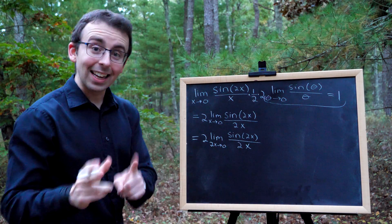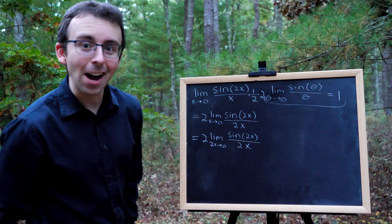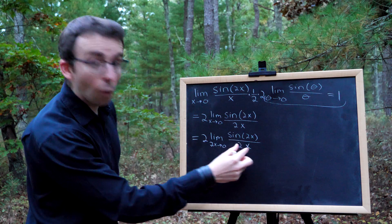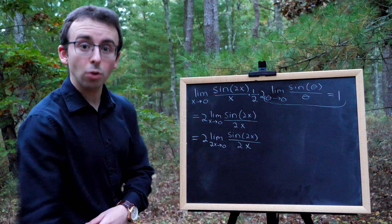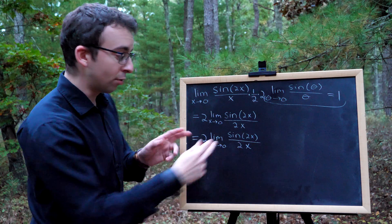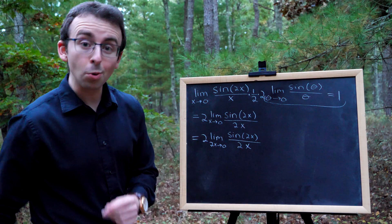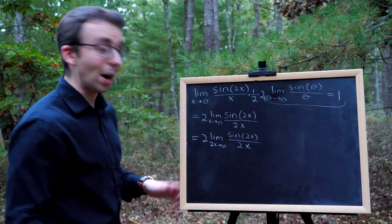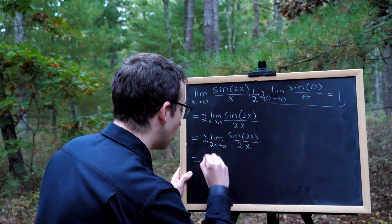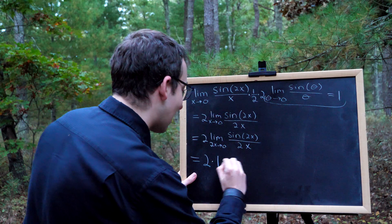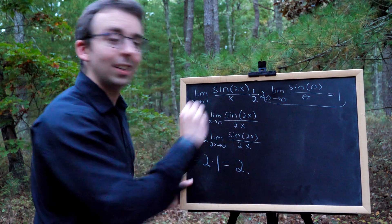Now I can apply the limit I know. We have the limit of sine of a thing over that thing, sine of 2x over 2x, with 2x approaching 0. So now this falls under this rule, it's equal to 1. But don't forget that 2 out front. So this is equal to 2 times 1, which I'll bet you know that one, that's equal to 2.